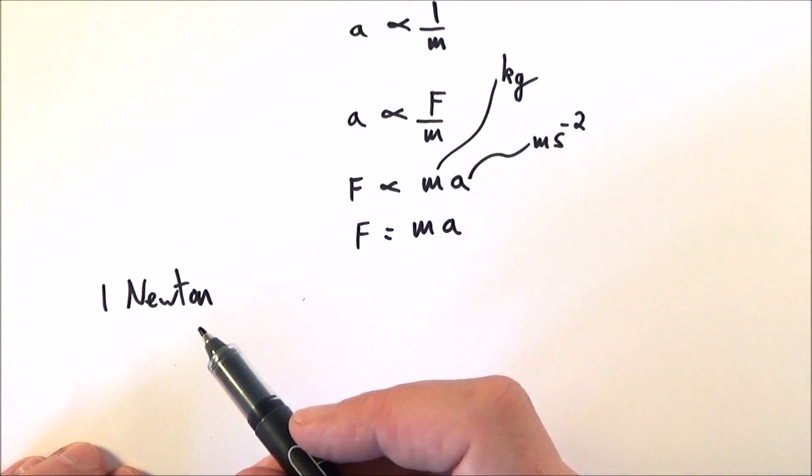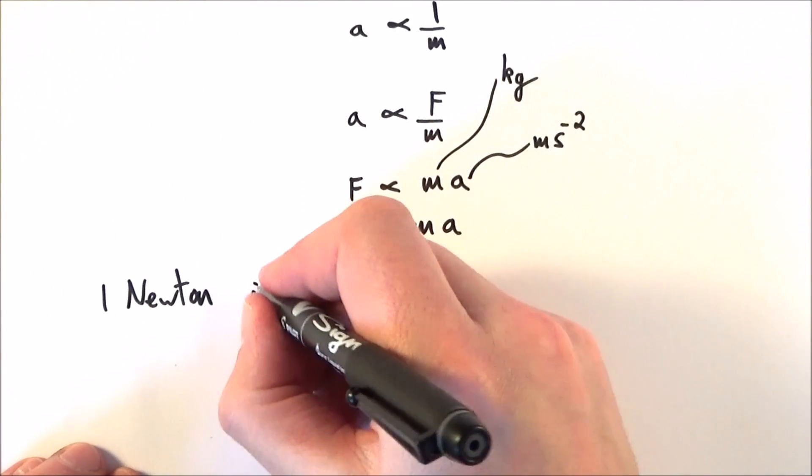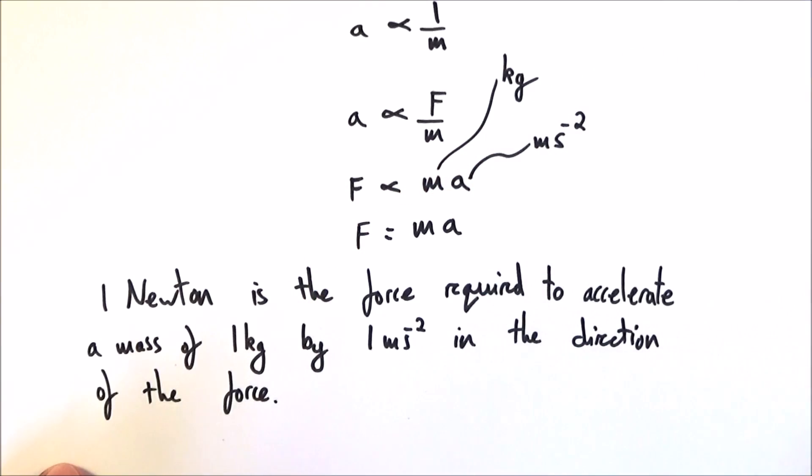This then gives rise to the definition of the newton. So one newton is the force required to accelerate a mass of one kilogram by one meter per second squared in the direction of the force. And that's really important. That final bit is often forgotten from these definitions.